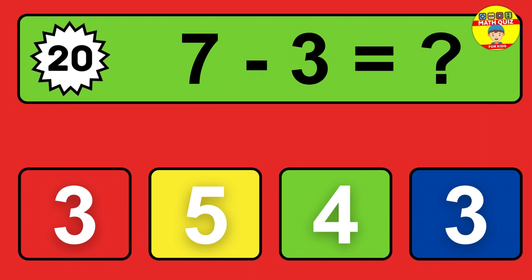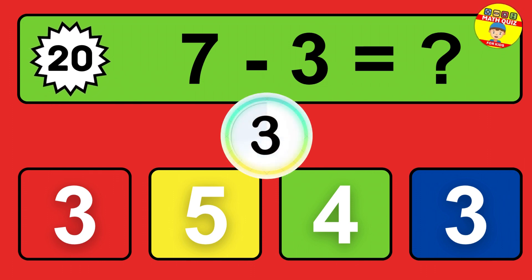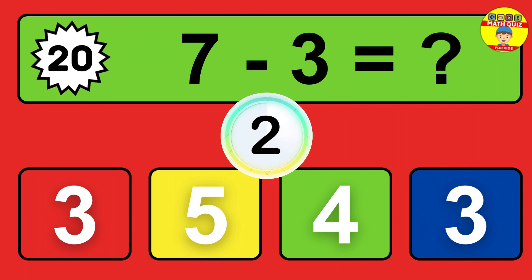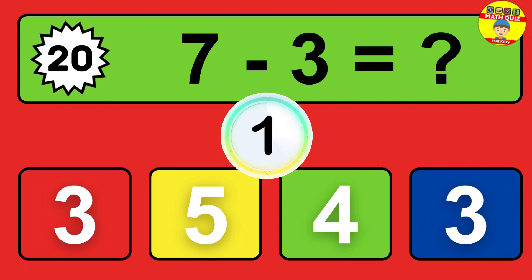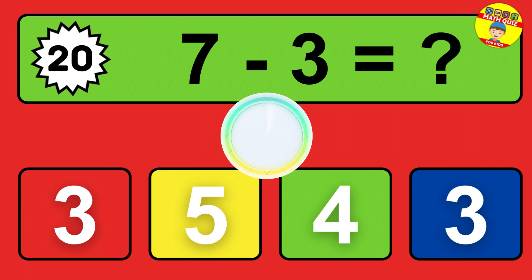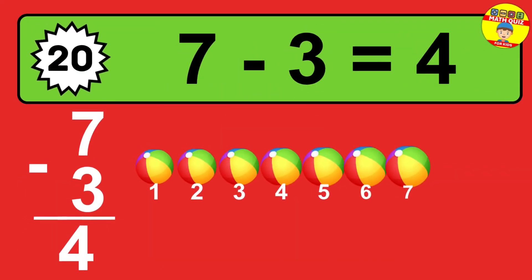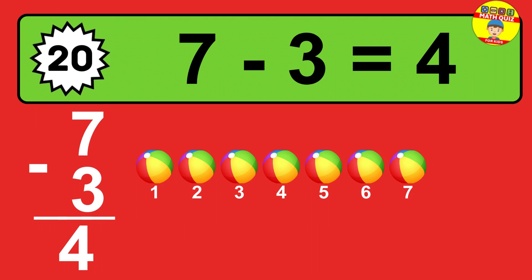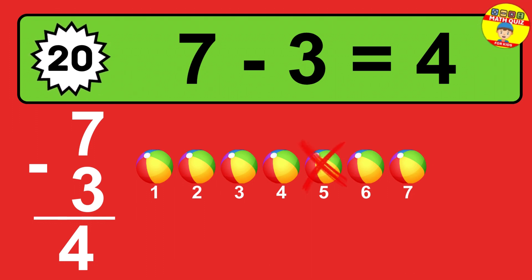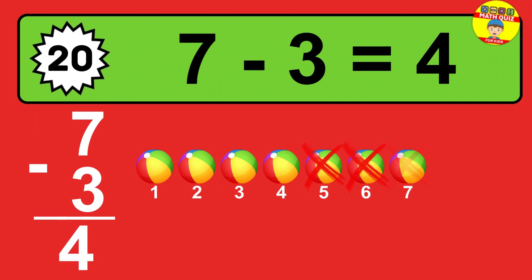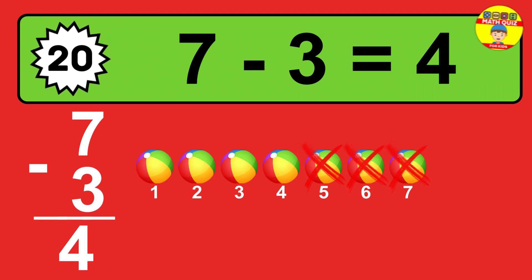Question 20. 7 minus 3 equals what? So the answer is 7 minus 3 is 4. Let's count it. 1, 2, 3, 4.